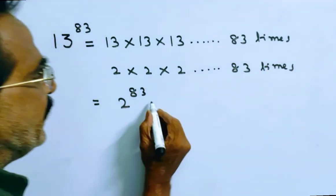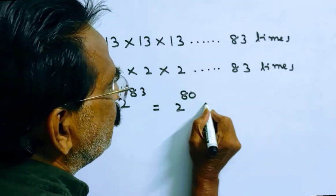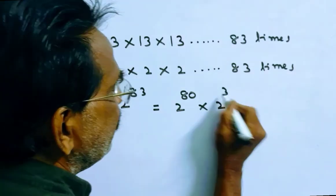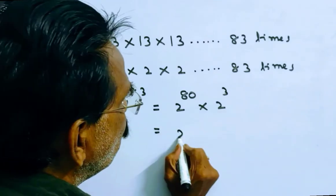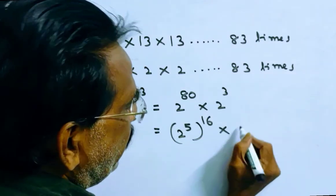Friends, now 2 power 83 is equal to 2 power 80 into 2 power 3. This is equal to 2 power 5 whole power 16 into 8.